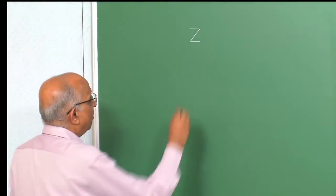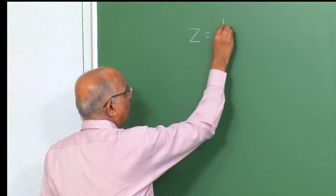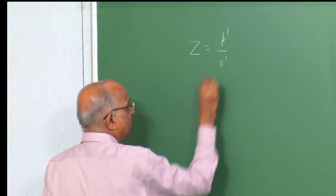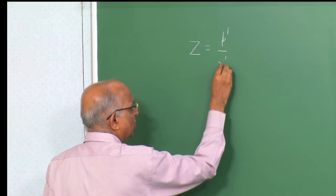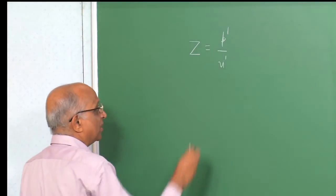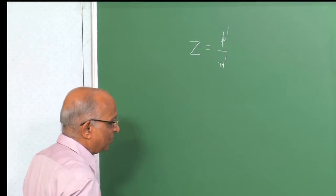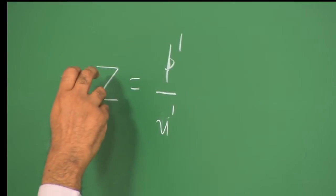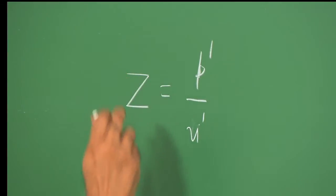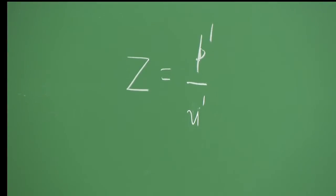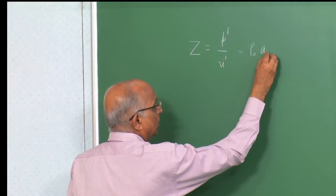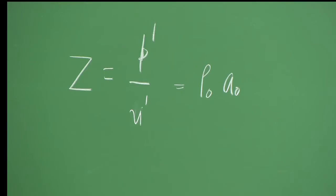Impedance Z is equal to the change in pressure divided by the change in velocity — we call velocity as u prime, the change in pressure as p prime. In the limit that the wave is an acoustic wave, we determined an expression for this mechanical impedance as equal to the density of the medium times the sound speed in that medium.